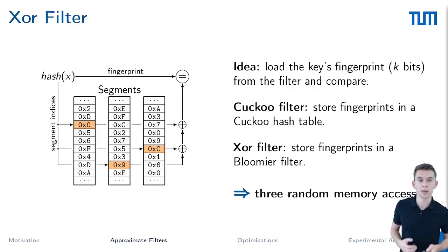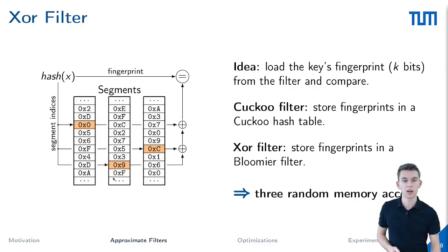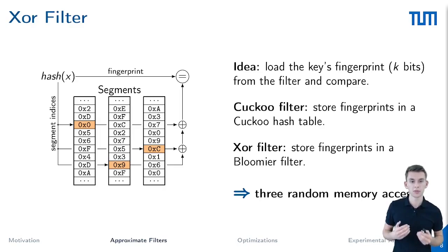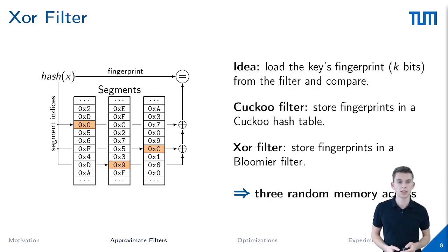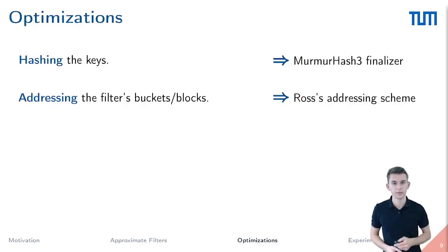The novel XOR filter uses a Bloom filter to store the fingerprints. In this case, the Bloom filter maps the initial set of keys to their k-bit fingerprints. This mapping, however, is only correct if the key is in the set; otherwise the result will be undefined. We can use this characteristic to build an approximate filter. However, constructing this filter is comparatively expensive and the resulting structure is immutable — it must be rebuilt when inserting additional keys. For large XOR filters, we expect three cache misses for accessing the values in the three segments.